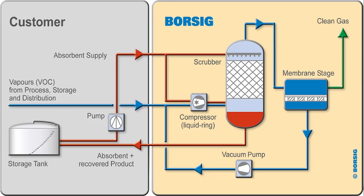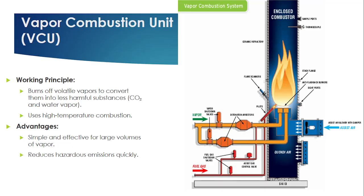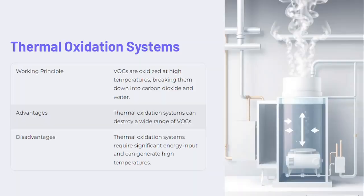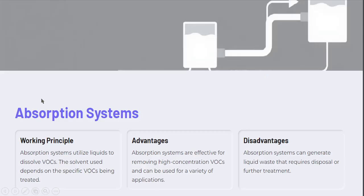Thermal oxidation and vapor combustion unit are essentially the same — we are oxidizing VOC into carbon dioxide and water vapor. The advantage is that this process is applicable to a wide range of volatile organic compounds. VCU or thermal oxidation is best suited for handling large volumes of gases. Now moving to the absorption type — in absorption, we use a liquid to dissolve the volatile organic compound, after which it is treated and the VOC is reprocessed.